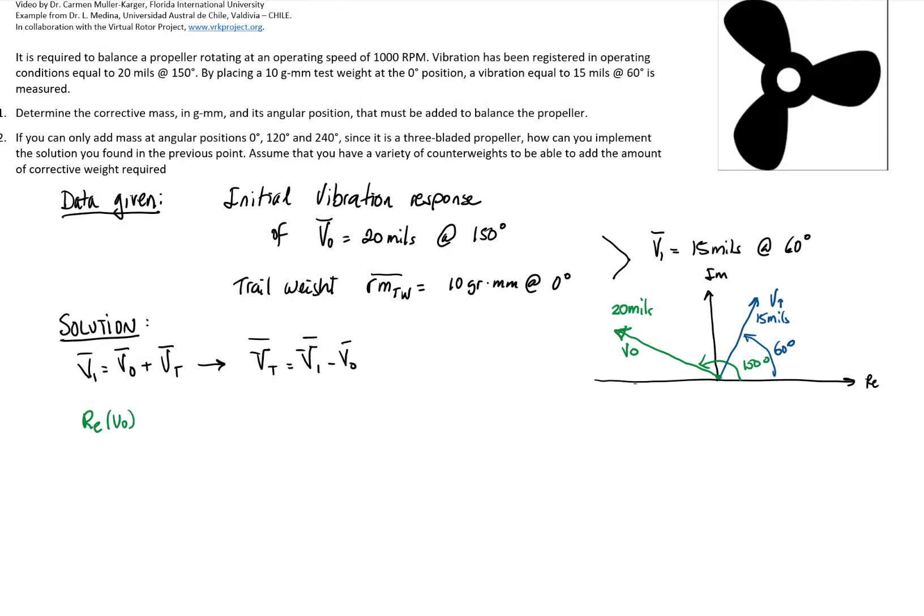So the real part of the first run, which is 20 cosine of 150 degrees, is negative 17.32. The imaginary part, which is 20 sine of 150, is 10.